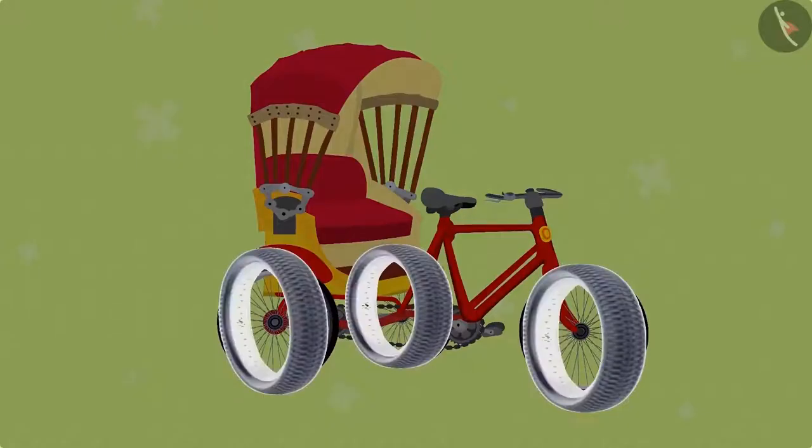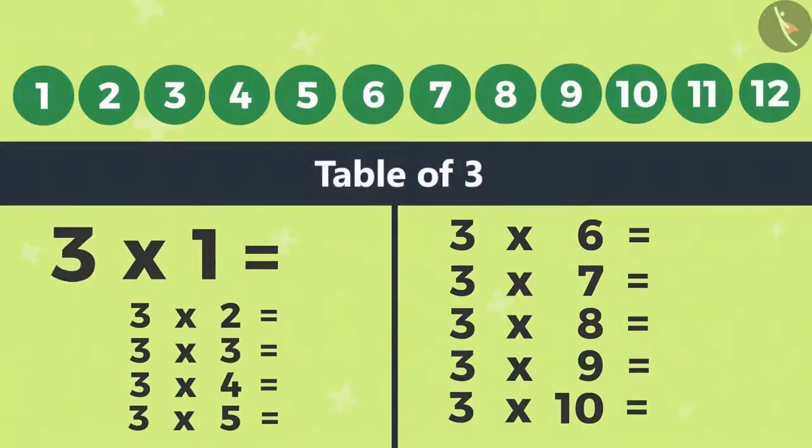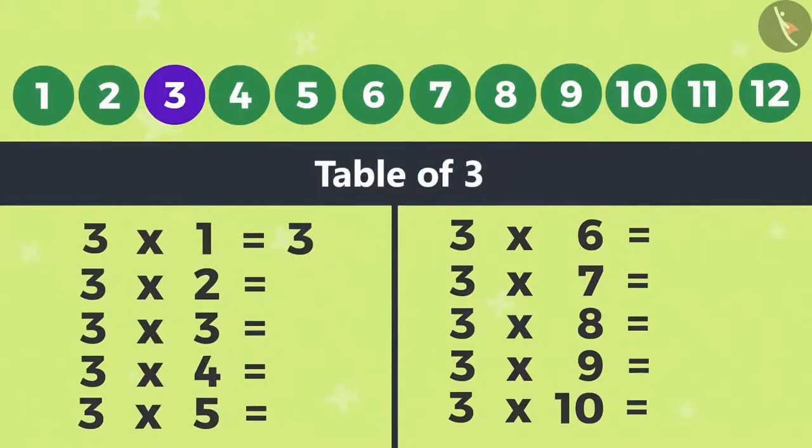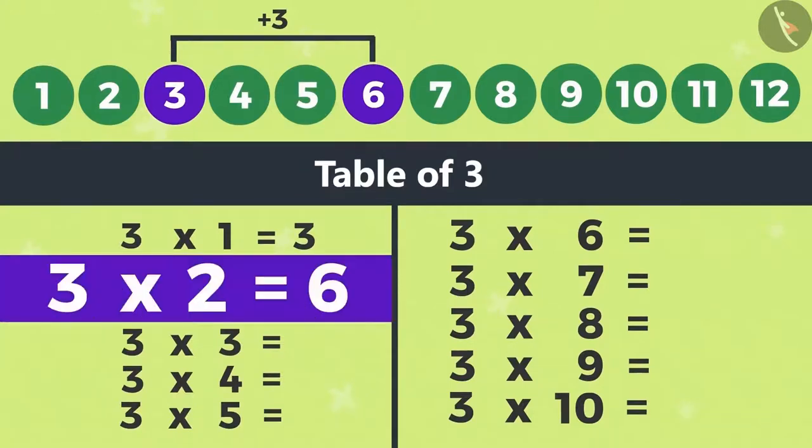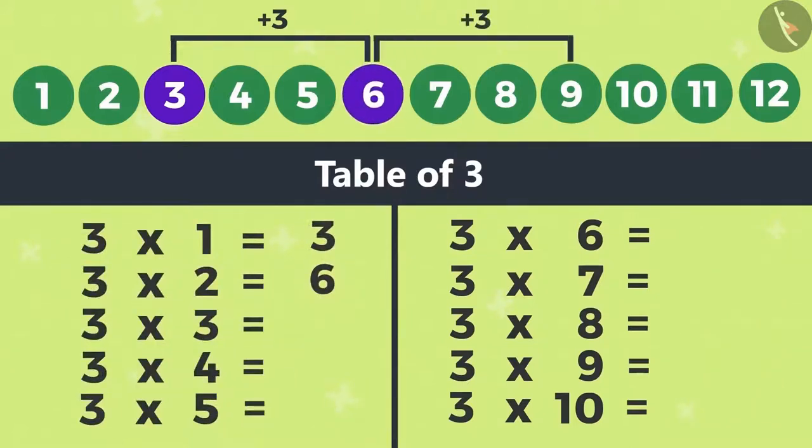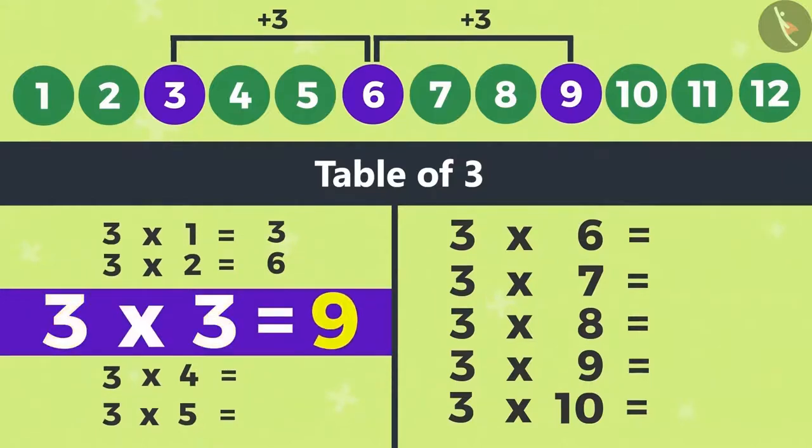So let's fill it. One rickshaw has three tires. And to find out how many tires two rickshaws have, we will add three to three. The answer will be six. That means multiplying two by three would give the answer six, which means six is double of three. Then after adding three to six, the answer will be nine. That means three threes are nine.